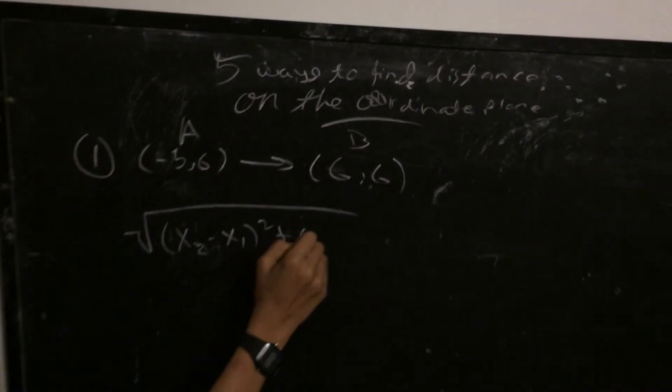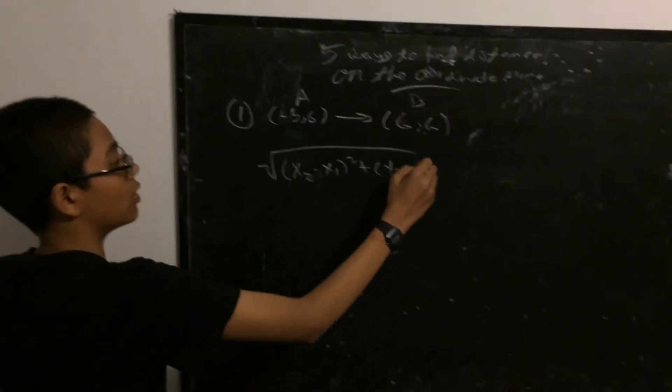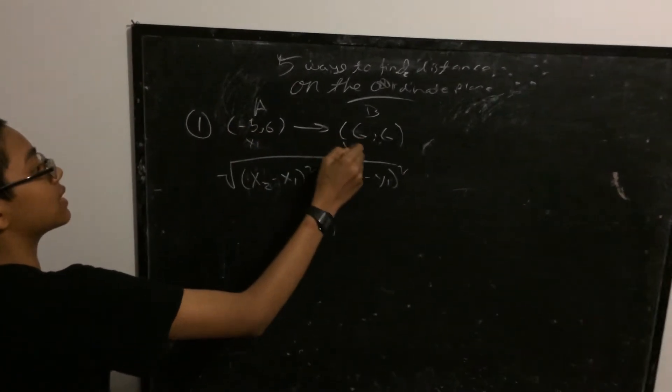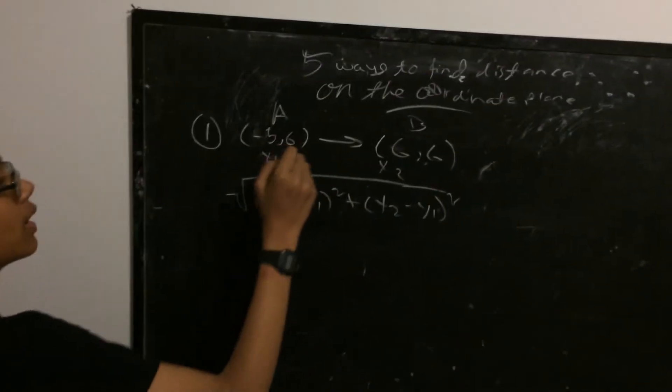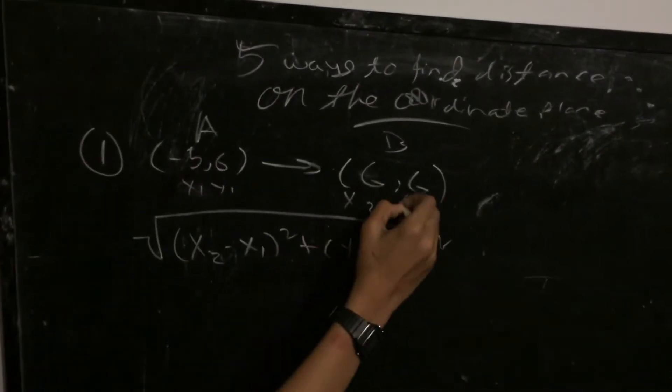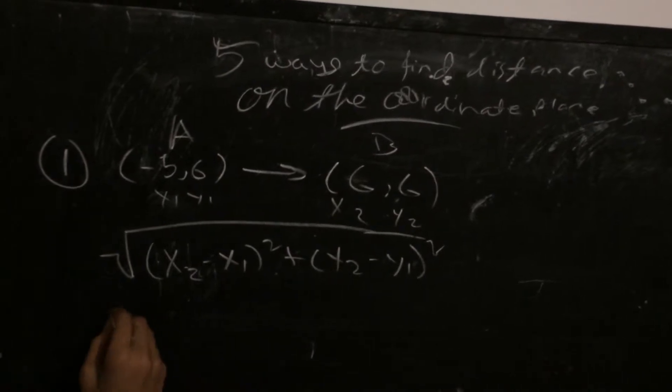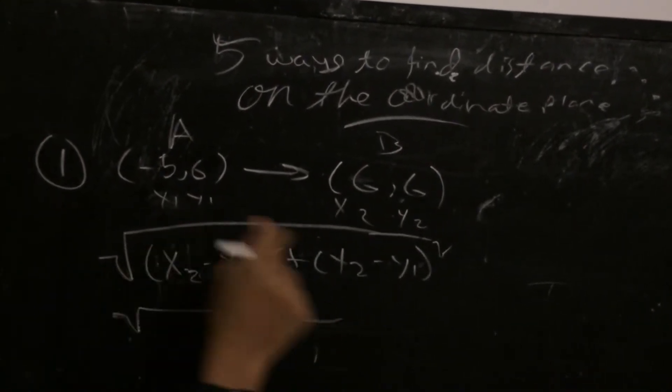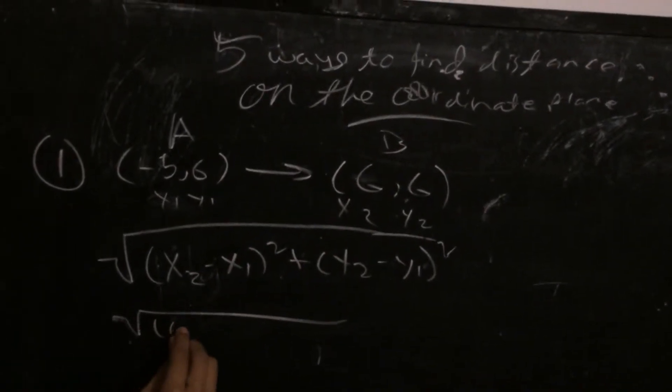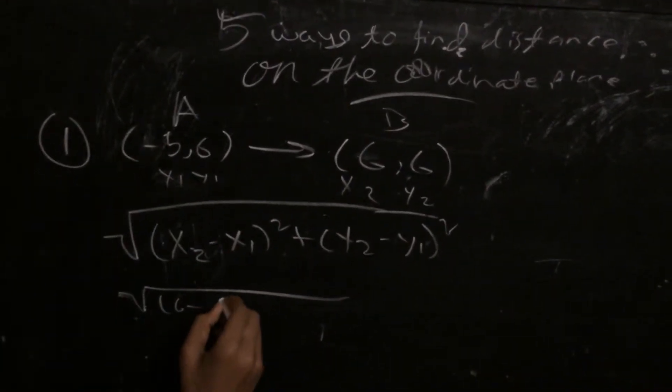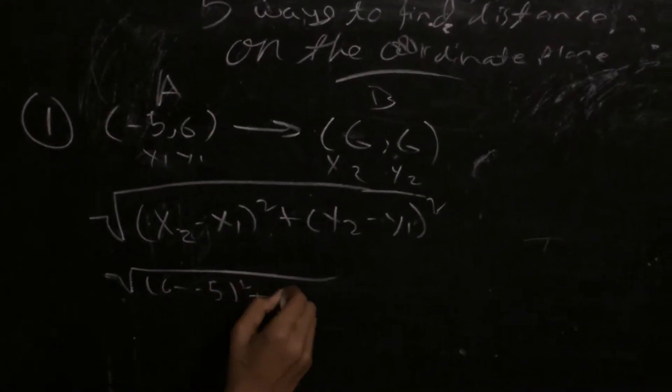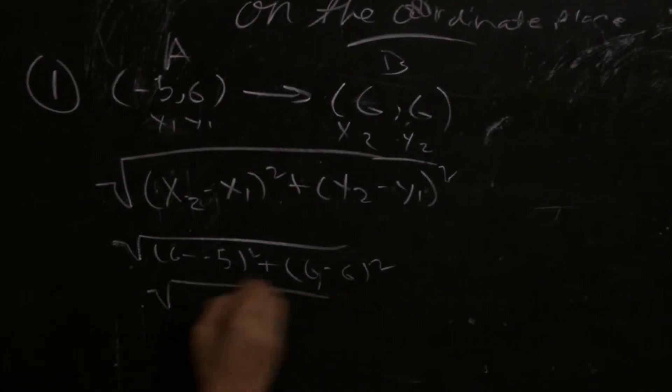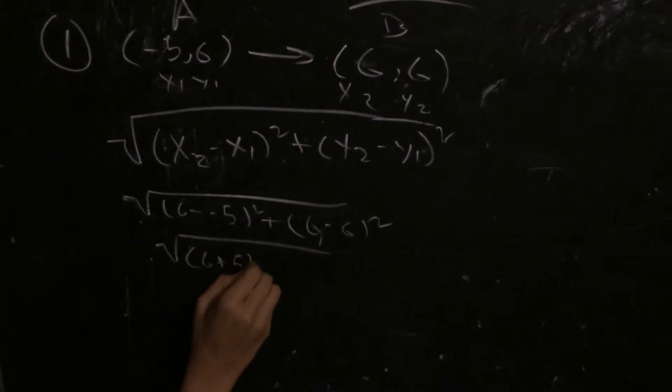Well, this is x2 minus x1 squared plus y2 minus y1 squared. So this is x1, this is x2, this is the y coordinate of the first point and this is the y coordinate of the second point. So we just plug in these values, so x2 is 6 minus negative 5 squared plus 6 minus 6 squared.